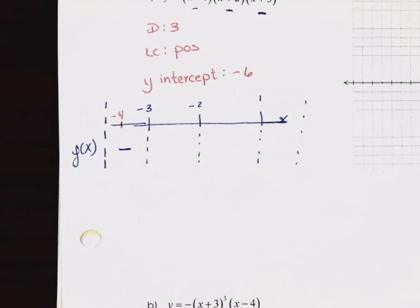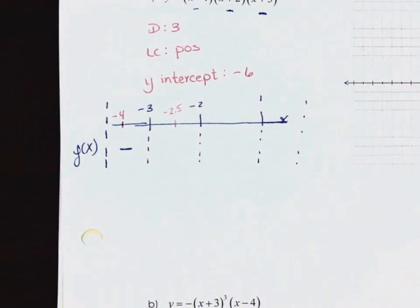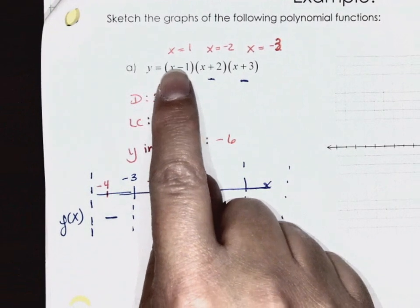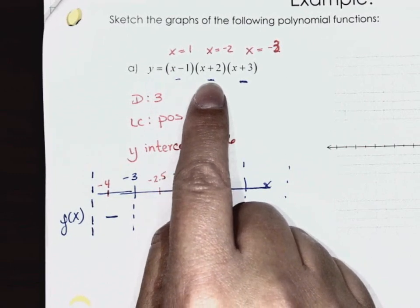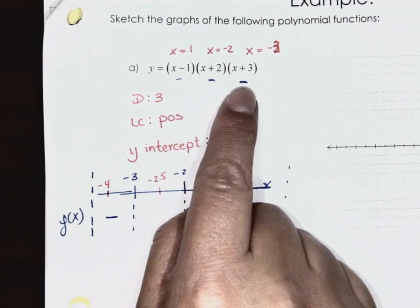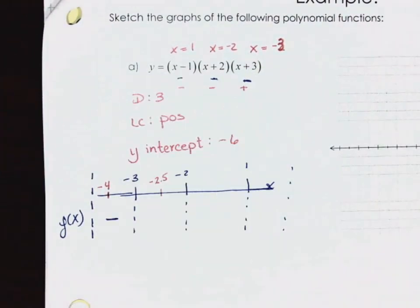A point between negative 2 and negative 3 — use negative 2.5. If I put −2.5 into each factor: first binomial gives negative, second gives negative, third gives positive. Negative times negative times positive equals positive. So between −3 and −2, y-values are positive.